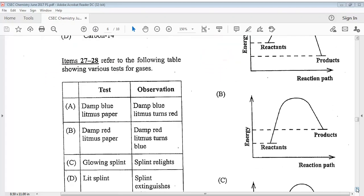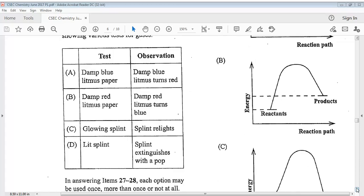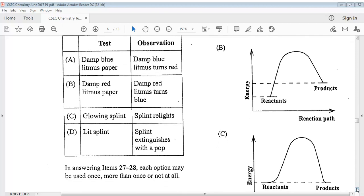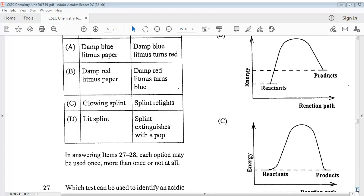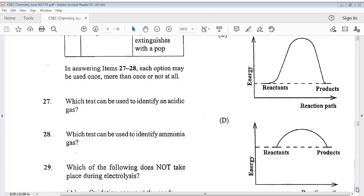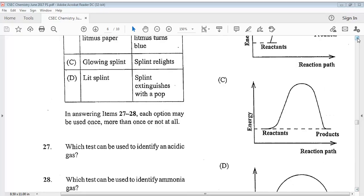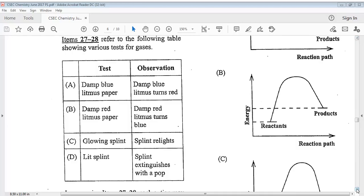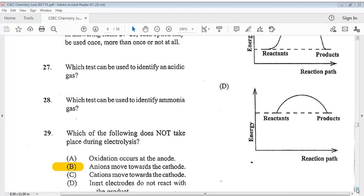Items 27 to 28 refer to the following table showing various tests for gases. You can take a look at it. In answering items 27 to 28, each option may be used once, more than once, or not at all. Question 27 says, which test can be used to identify an acid gas? The answer is A. So the answer is A for question 27. Question 28 says, which test can be used to identify ammonia gas?